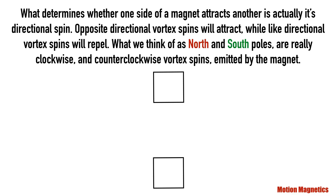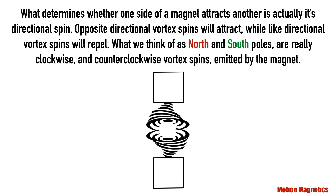What determines whether one side of the magnet attracts another is actually its directional spin. Opposite directional vortex spins will attract, while like directional vortex spins will repel. What we think of as north and south poles are really clockwise and counterclockwise vortex spins emitted by the magnet.